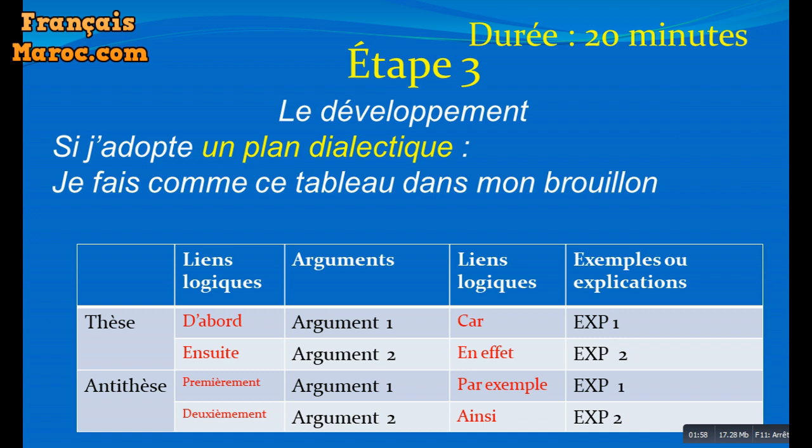Alors ça c'est si vous choisissez un plan dialectique, ça veut dire que vous avez le choix entre le tableau qui précède et le tableau que vous voyez ici. Alors le plan dialectique ça veut dire la thèse et l'antithèse, deux arguments pour et deux arguments contre bien sûr.